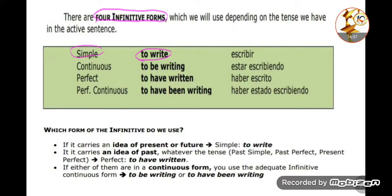If the tense is present simple or past simple, it becomes 'to write'. If it's continuous — present or past — we use 'to' + 'be' + verb-ing, for example 'to be writing'. If it's perfect — present perfect simple or past perfect simple — we use 'to have' + verb three. Memorize this table.